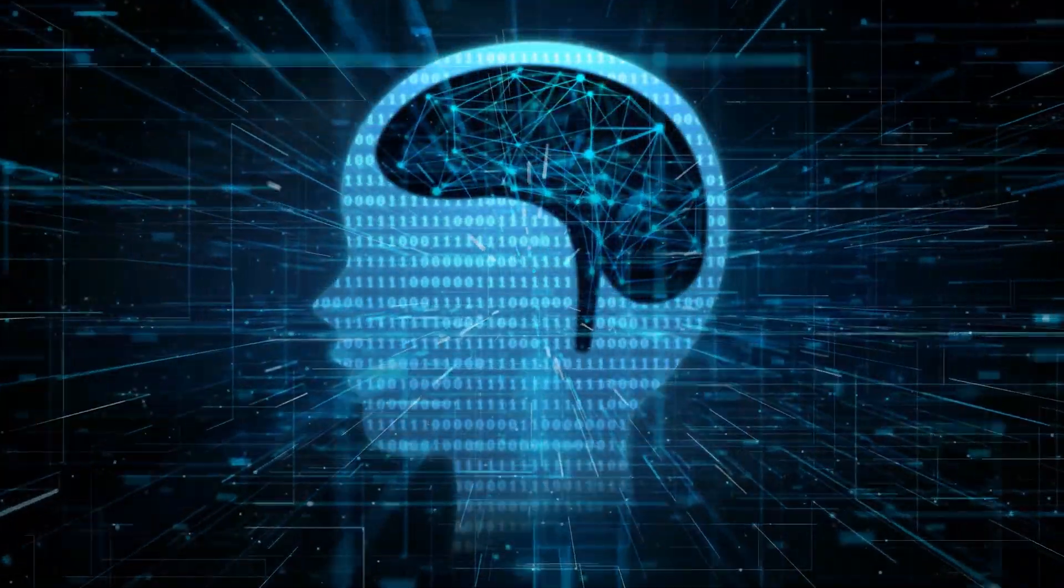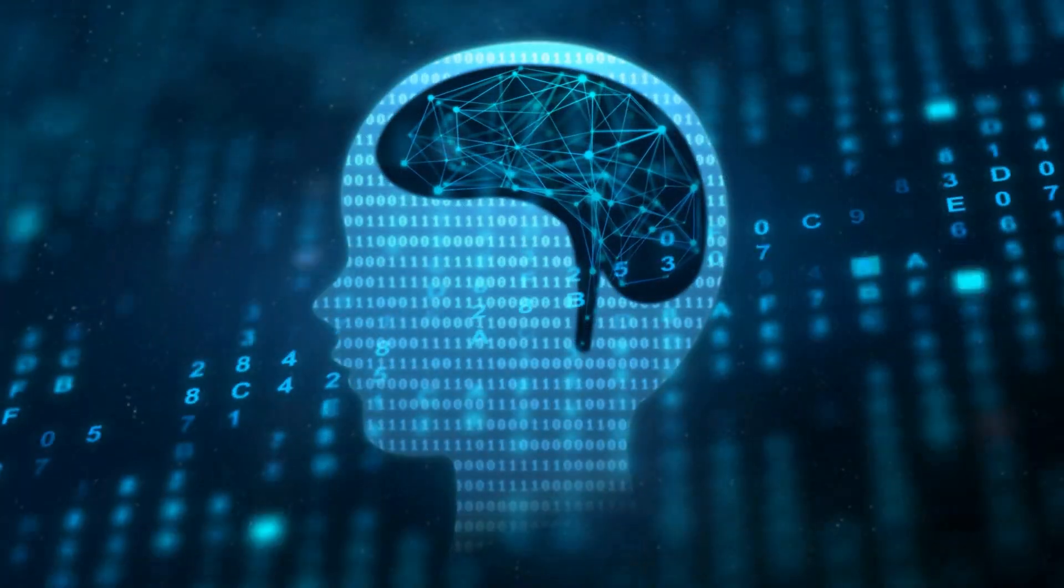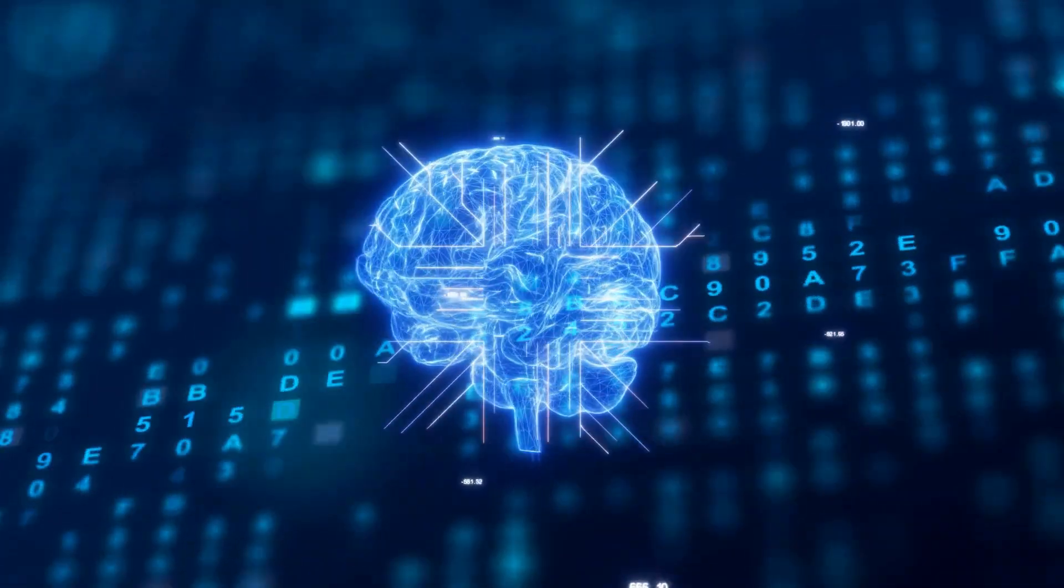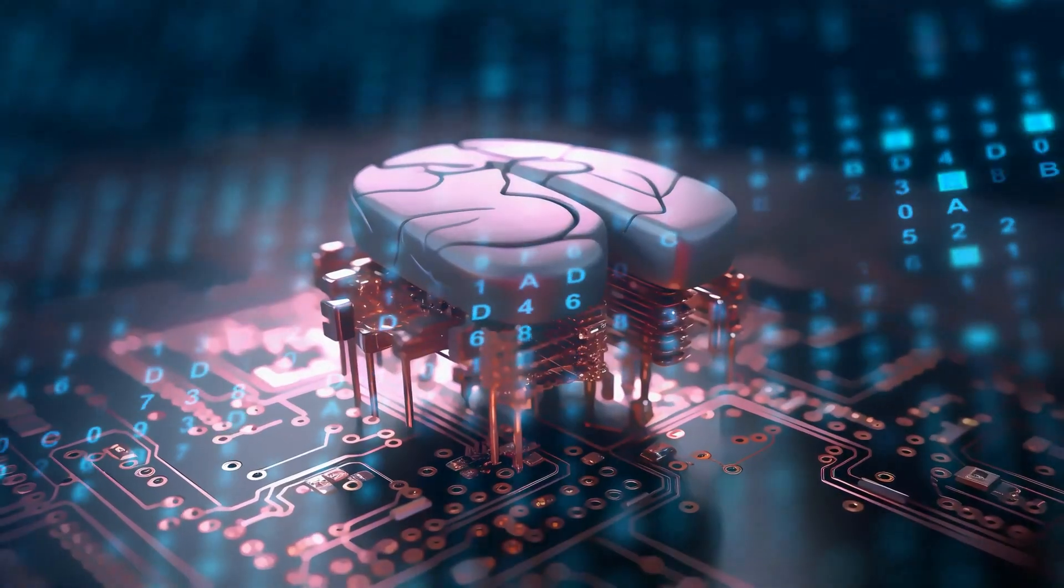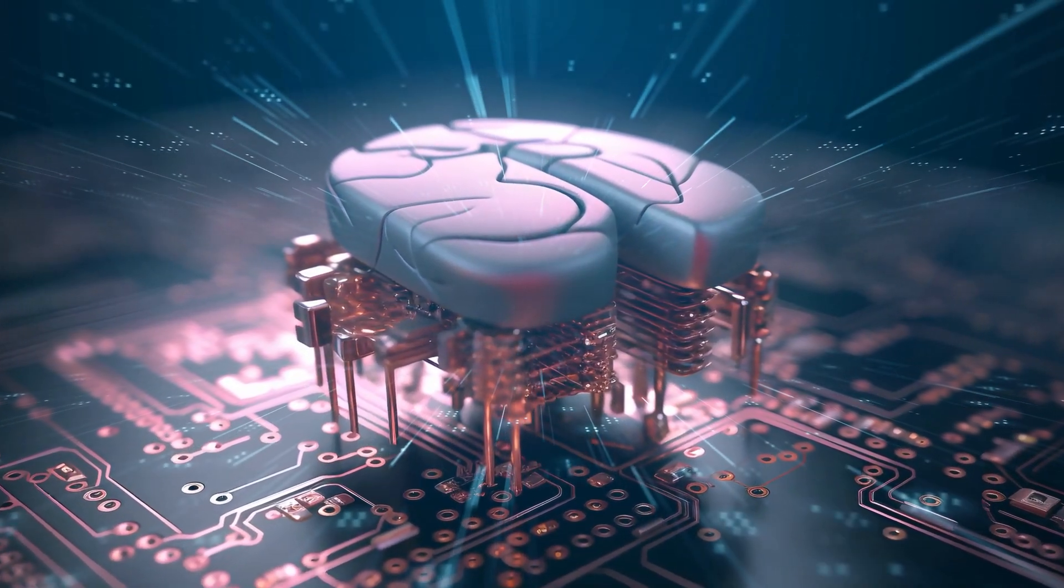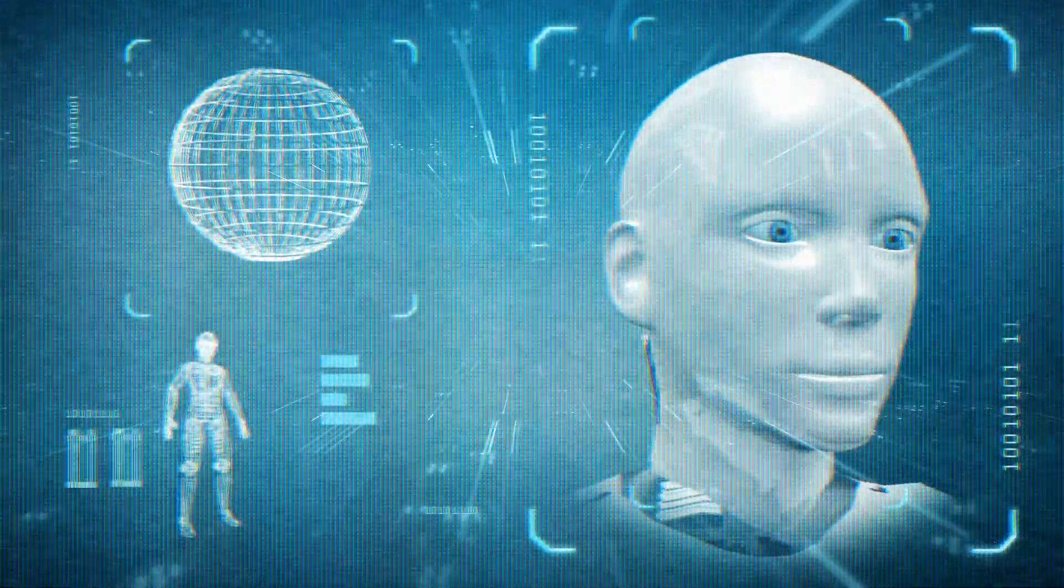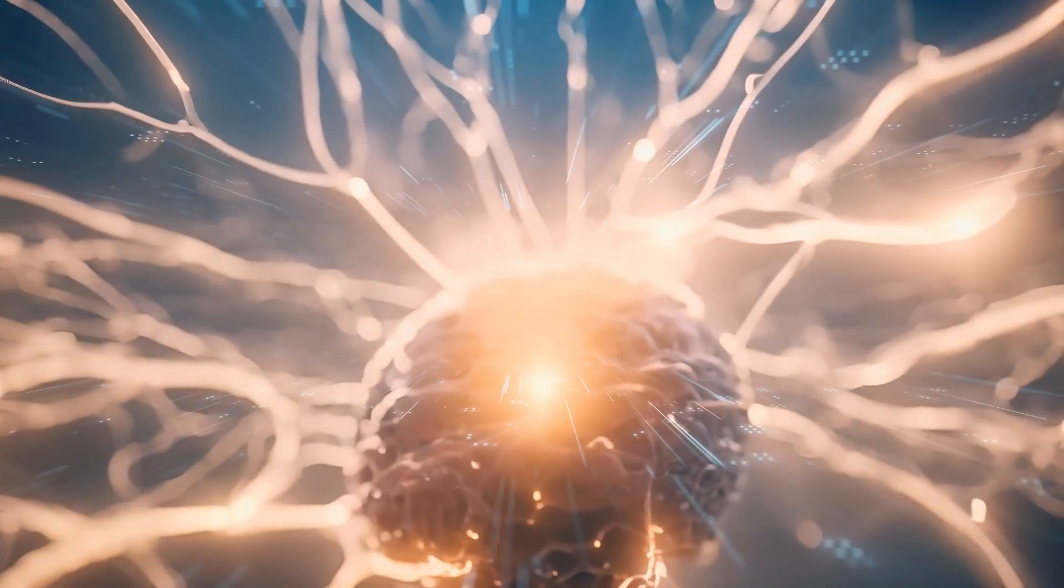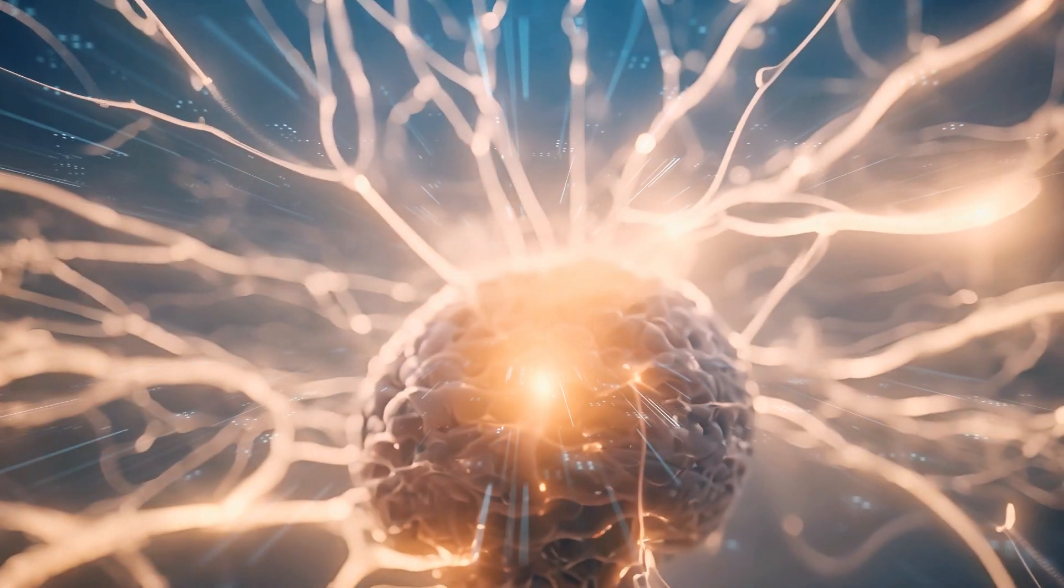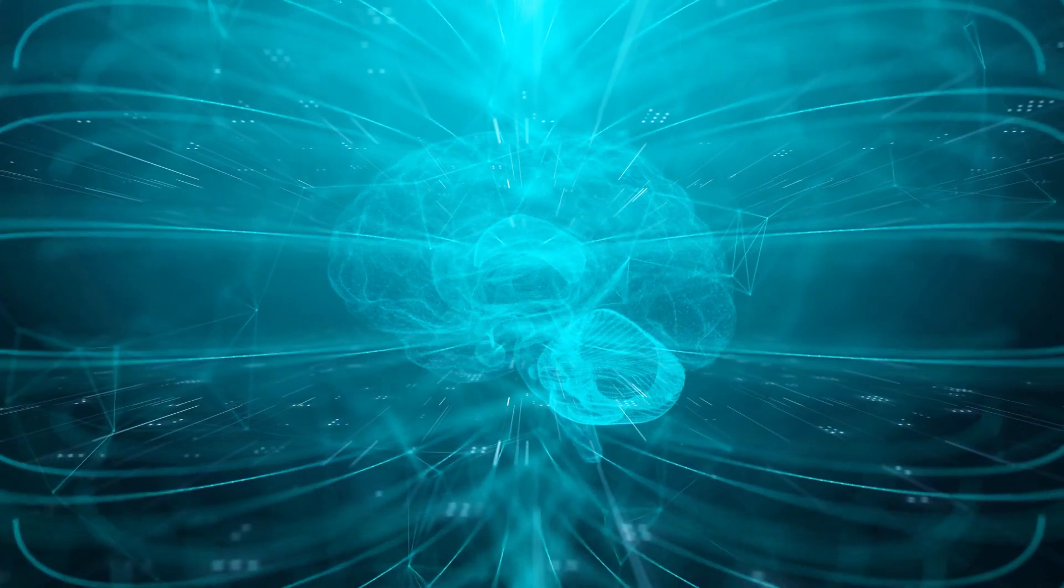Now, here's where Neuralink comes in. Neuralink is developing technology to integrate AI systems directly into the human brain. This could enhance our minds in ways we can barely imagine. By creating a direct interface between our neural processes and advanced computational systems, Neuralink might allow us to expand our cognitive abilities far beyond our natural limits.